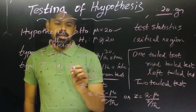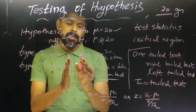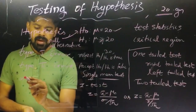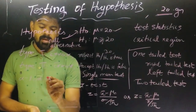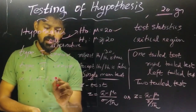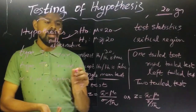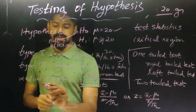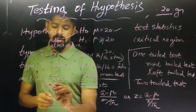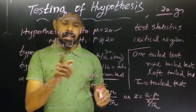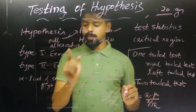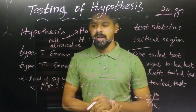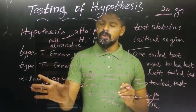We look at Type 1 and Type 2 errors in relation to the level of significance. Alpha means level of significance. The probability of Type 1 error — that is, the probability of rejecting H0 when H0 is true — is called alpha, the level of significance.